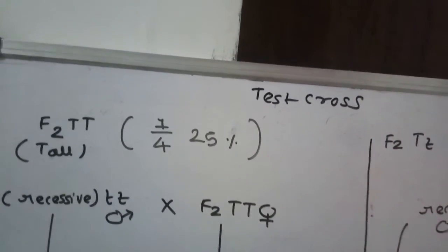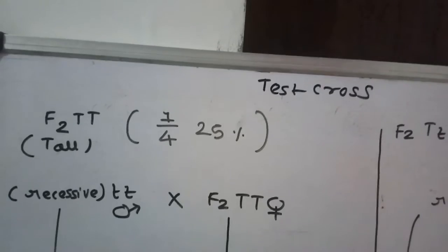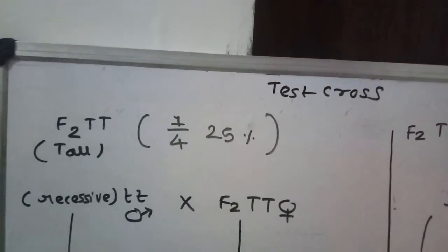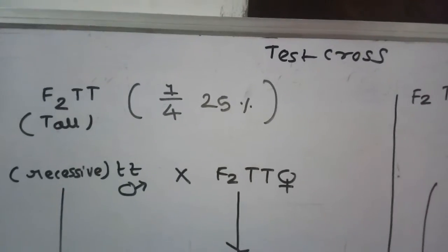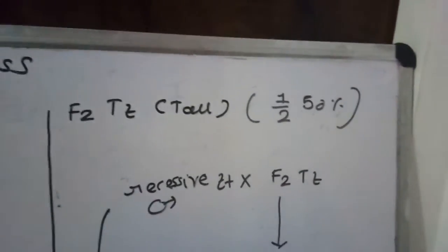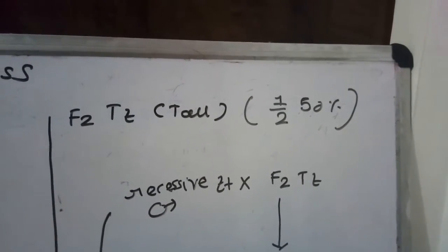But what about the tall plants? This 3/4 tall plants: 1/4 plants are capital T capital T, that is homozygous dominant, while the other 1/2 is basically capital T small t, that is heterozygous dominant.